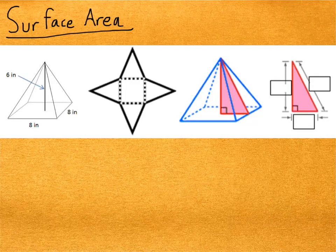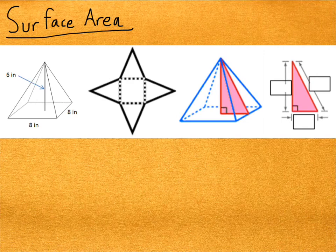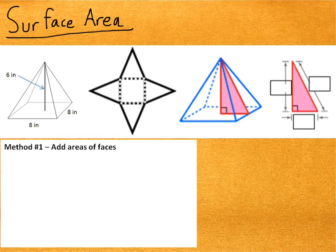Let's start off with the surface area. I've provided four different views of the same pyramid for this part, just to help you visualize what's going on. Let's find the surface area of a pyramid that has a square base with sides of 8 inches and a height of 6 inches. We'll start with our first method, which is to add the areas of all the faces, so we'll be looking at the net for the pyramid.